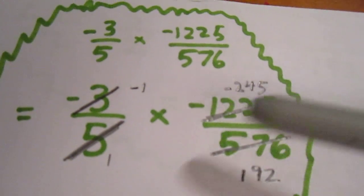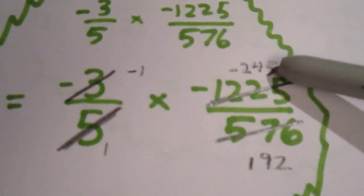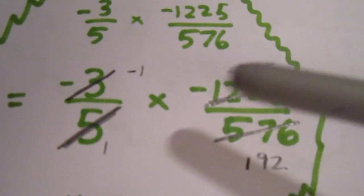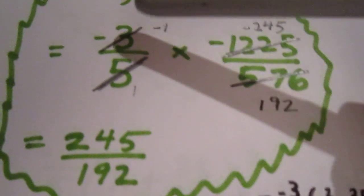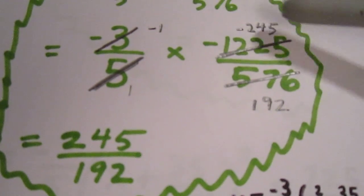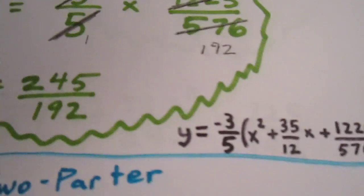Negative 1225 divided by 5 is negative 245. So, we can reduce this to negative 245 and reduce this to 1. And when we multiply across, we get positive 245 over positive 192.